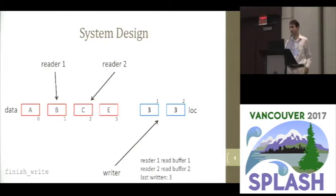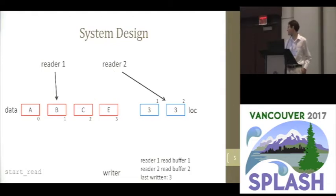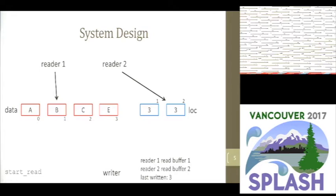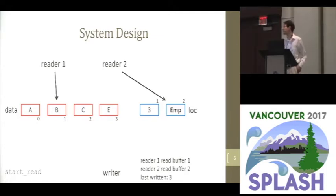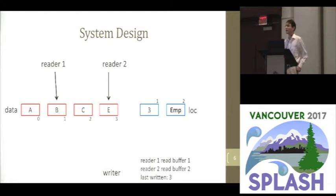When a reader wants to read a value, it does another atomic exchange operation on its own location buffer, and simultaneously gets the location of the newest data, as well as replacing it with an acknowledgment signal empty. Then it can go and read the data from the newest location, once again with non-atomic operations. If the reader happens to run much more quickly than the writer, it will read its own acknowledgment signal again and just go back to reading the value that it's already read.